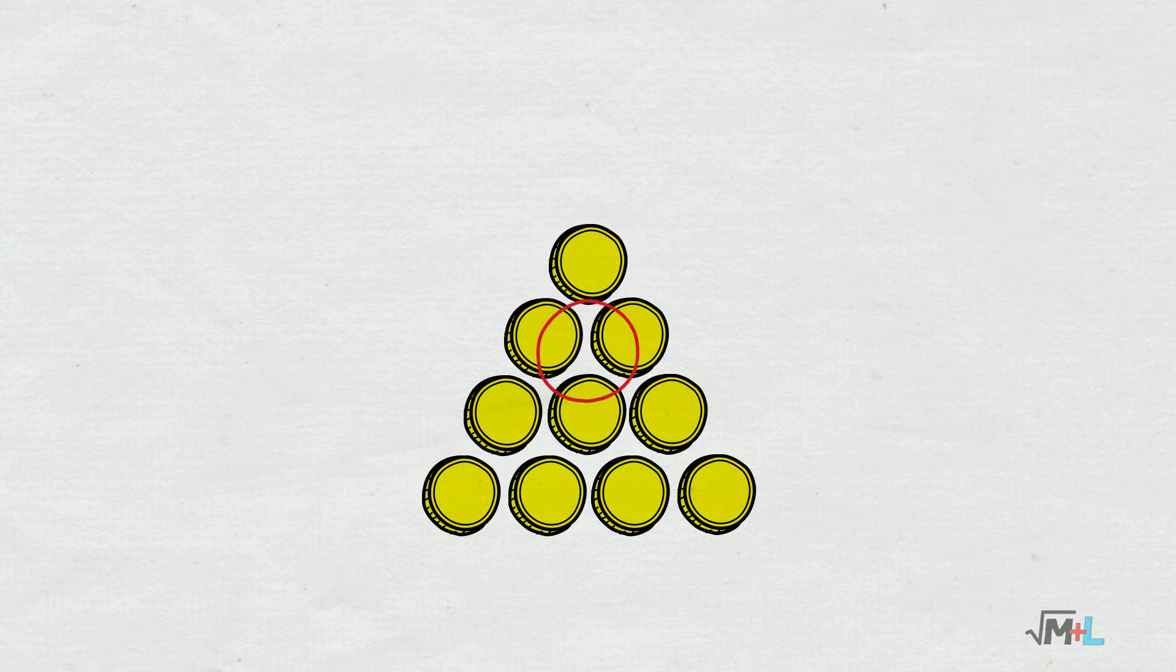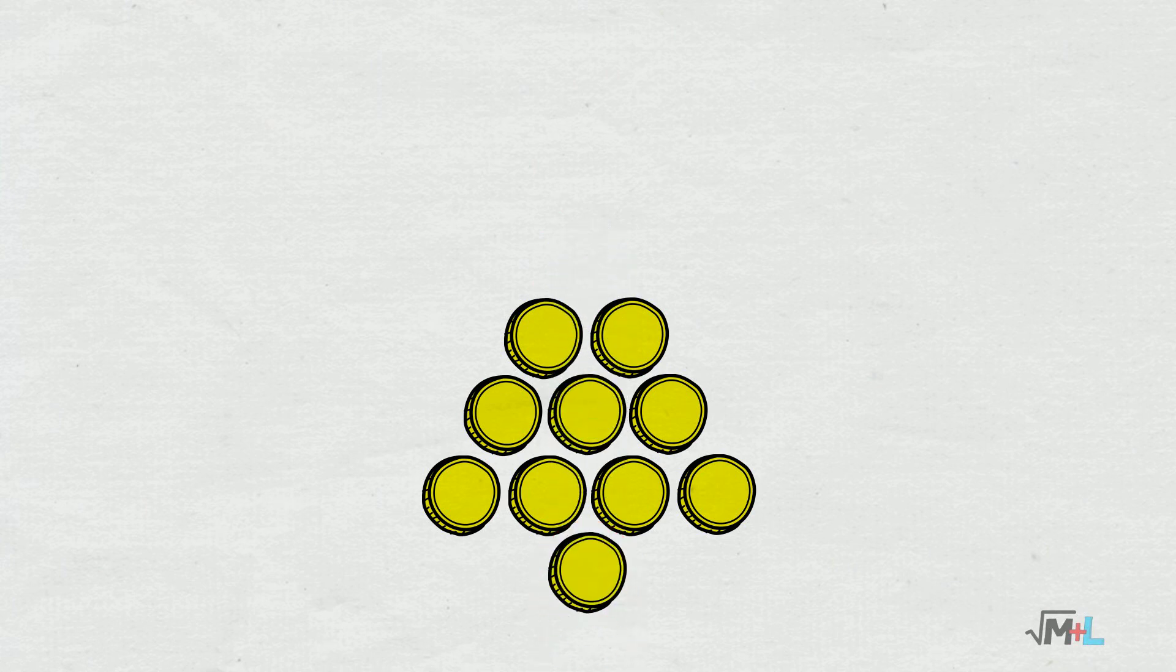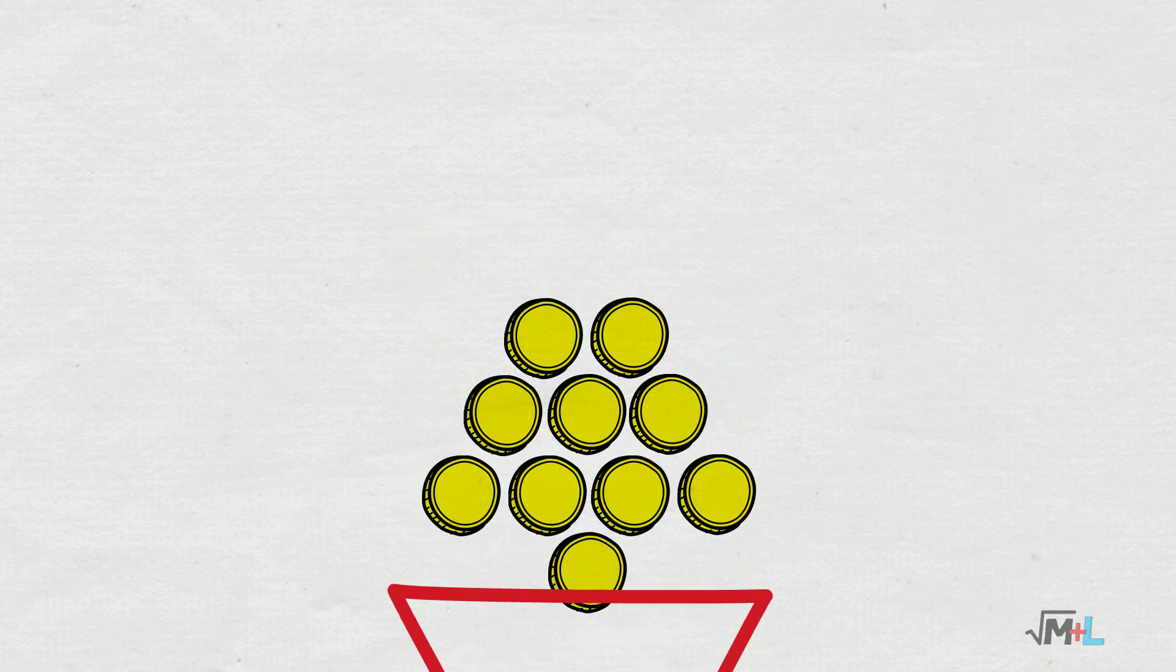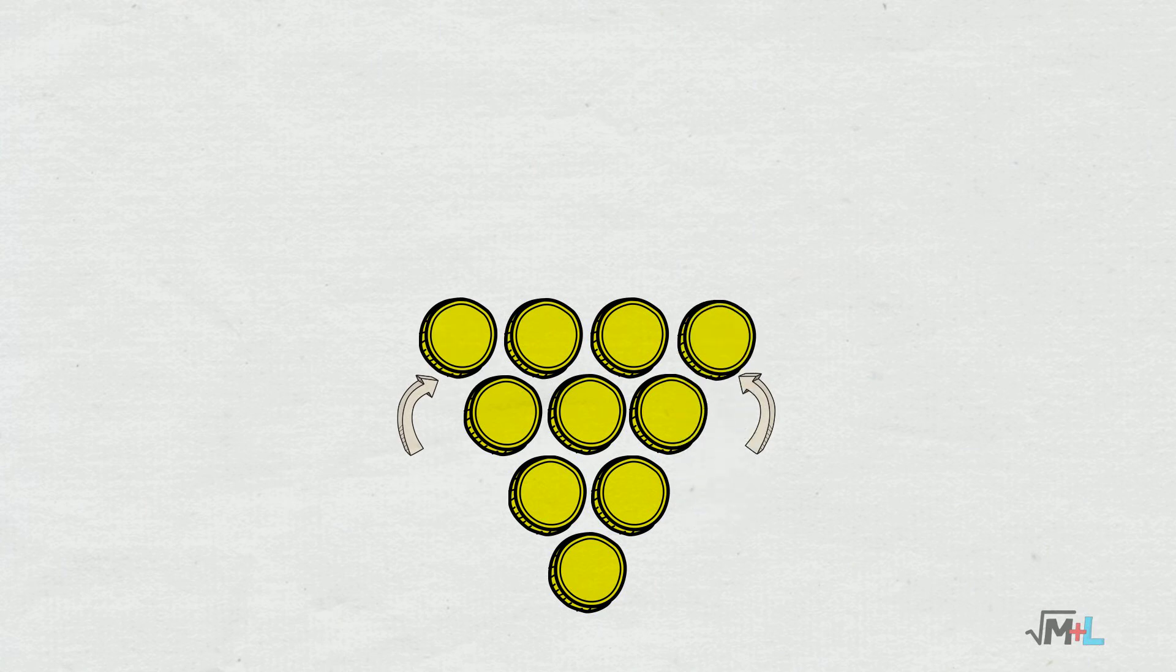But where? We have to end up with corner at the bottom. So, let's try moving this coin down and see what happens. Well, now the shape of upside down pyramid already starts to emerge and you can fix it by moving 2 other corner coins. And that's it!